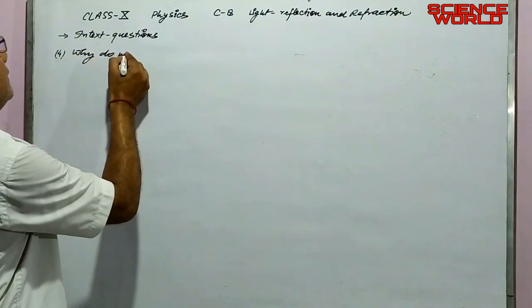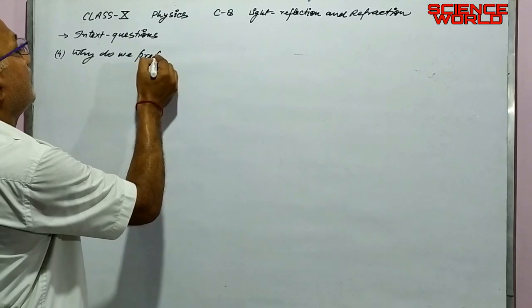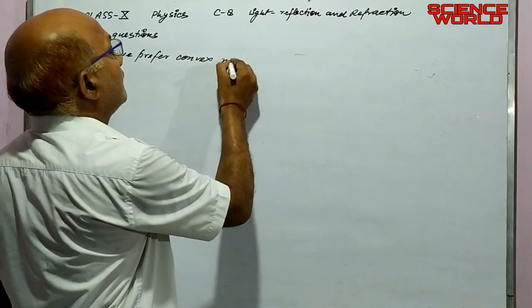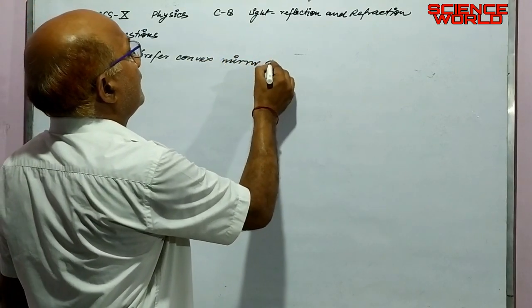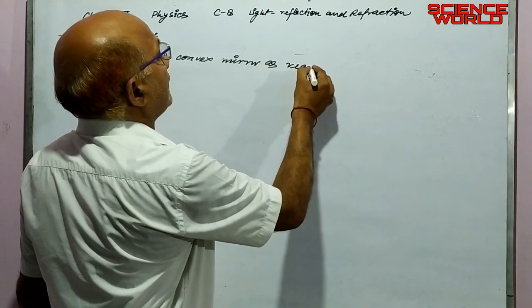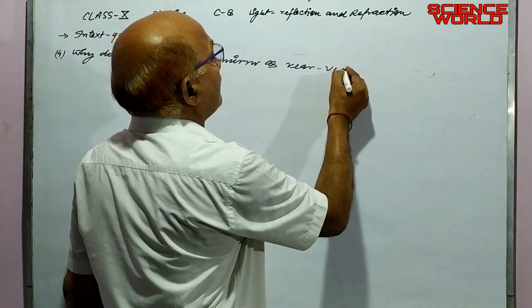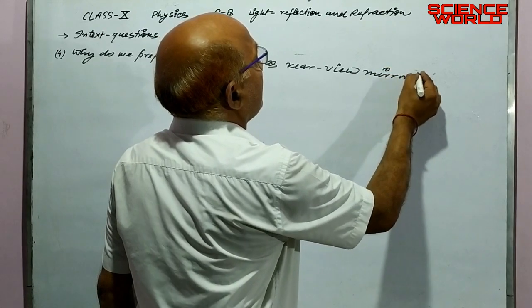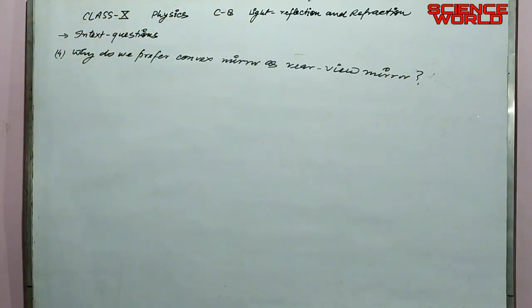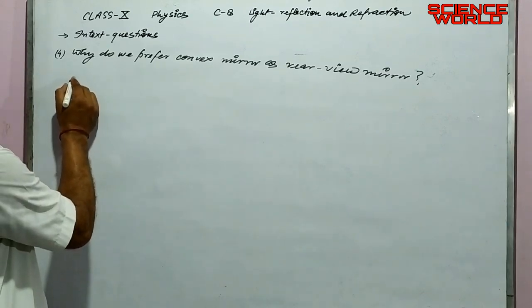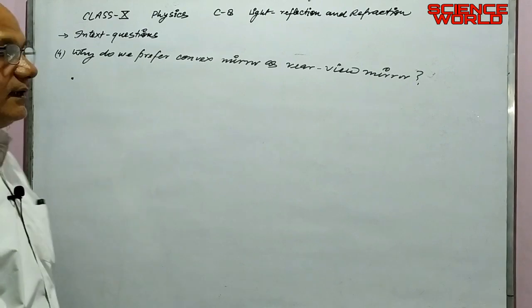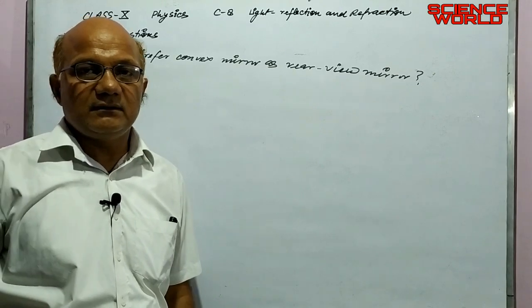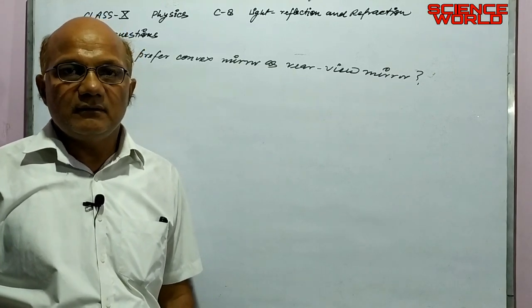The next question is: why do we prefer a convex mirror as a rear view mirror? A rear view mirror is used in automobiles to allow the driver to see the traffic behind the vehicle.